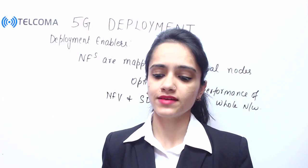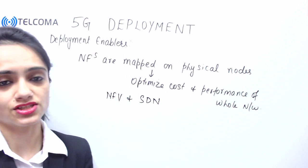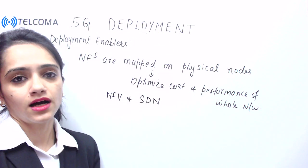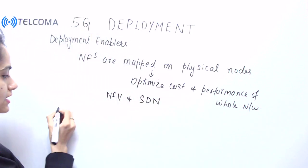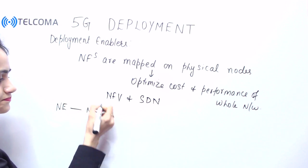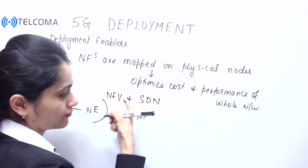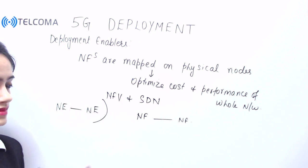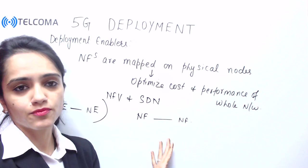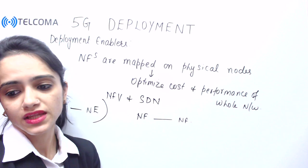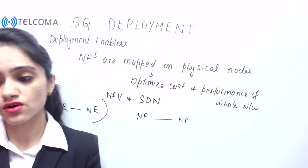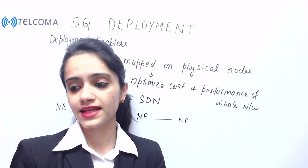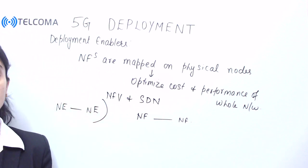NFV and SDN concepts will cause rethinking of traditional protocol stack methodologies. Here we can define interfaces directly between network functions rather than network equipment as in previous generations. These interfaces between functions do not necessarily have to be protocols — they could be any software interfaces. NFV and SDN are driven by the flexibility requirements of the core network, and an extension of both enablers to radio access networks has also been developed.